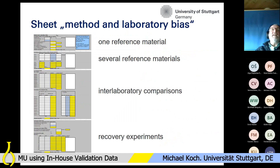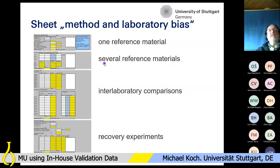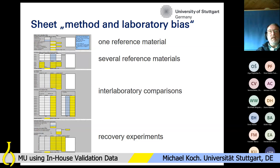In the sheet 'Method and Laboratory Bias' we have four different possibilities. The first is if you use one reference material. The second is if you have several reference materials. The third block is for interlaboratory comparisons or proficiency tests. The last one is if you want to use results from recovery experiments to estimate your bias.